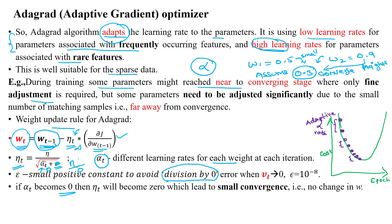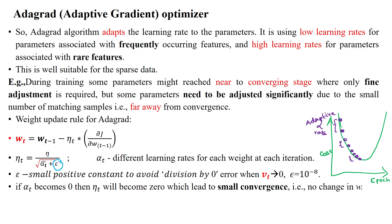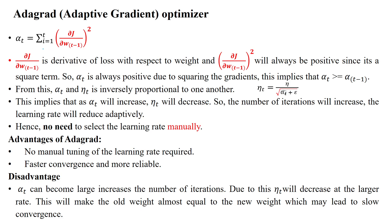When alpha_t becomes zero and causes the term to go to infinity, we would not get faster convergence. To avoid this, we use the epsilon value — a small positive constant — so that even when alpha_t approaches zero, we still get a small positive update to the learning rate eta_t. That is why epsilon is used. Alpha_t holds the squared gradient value with respect to the previous weight step.